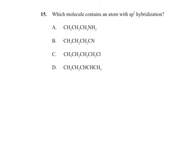Question 15 asks which molecule contains an atom with sp² hybridization. sp² hybridization involves a double bond, formed from the s orbital and two p orbitals. Options A, B, and C show only single or triple bonds — none have sp² centres. Option D has two carbons each with only one hydrogen, indicating a double bond between them. Those carbon atoms have sp² hybridization, so the answer is D.